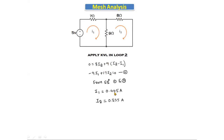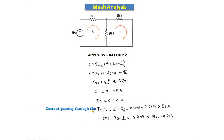Solving equations one and two using a calculator, we get I1 = 0.445 amperes and I2 = 0.235 amperes. The question asks for the current through the 9 ohm resistor. Both directions give the same magnitude: I1 - I2 = 0.445 - 0.235 = 0.21 ampere, or I2 - I1 = 0.235 - 0.445 = -0.21 ampere. The answer is 0.21 ampere.